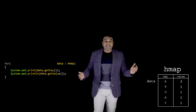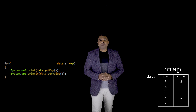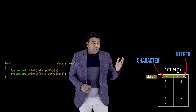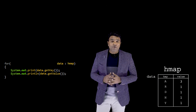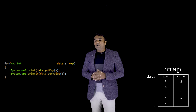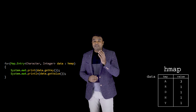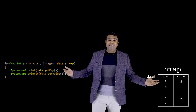To the left of 'data', we must provide the data type. The data type is determined by looking at the map: the key is of type Character and the value is of type Integer. So the data type of the entry is a combination of Character and Integer. The syntax to specify this in the for-each loop is: Map.Entry<Character, Integer>. For beginners this may seem lengthy, but you will get accustomed to it.